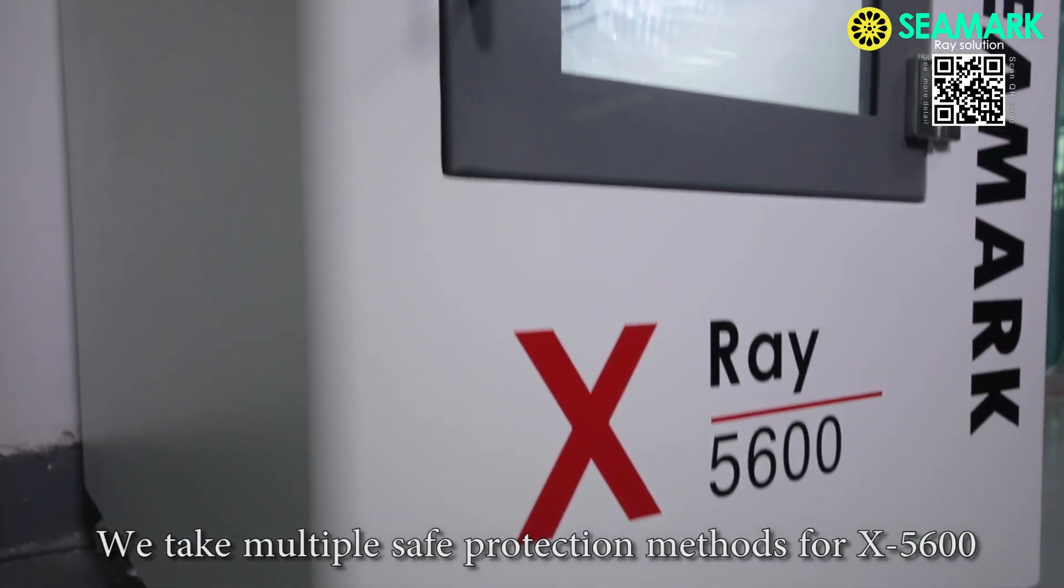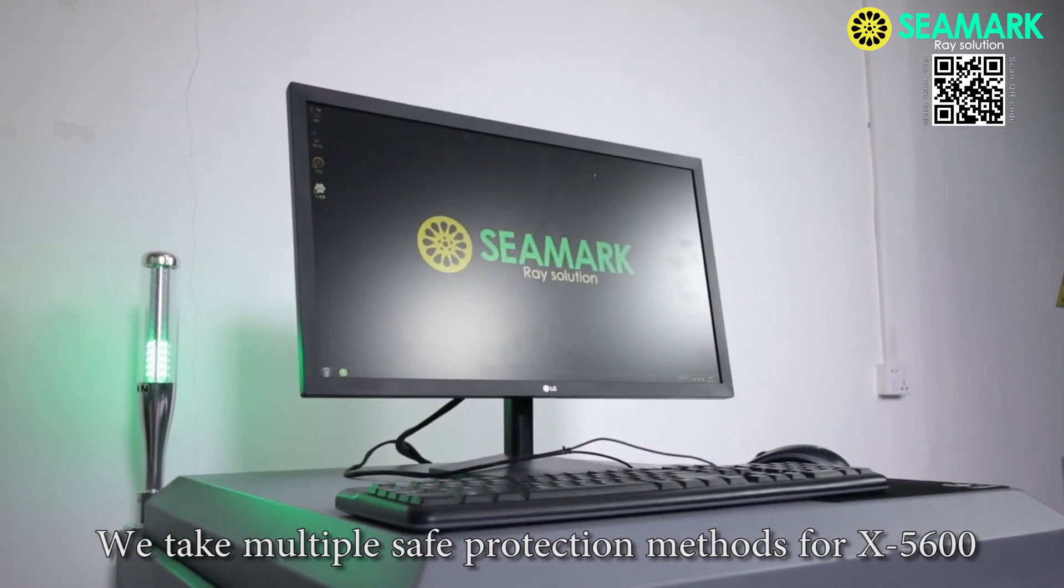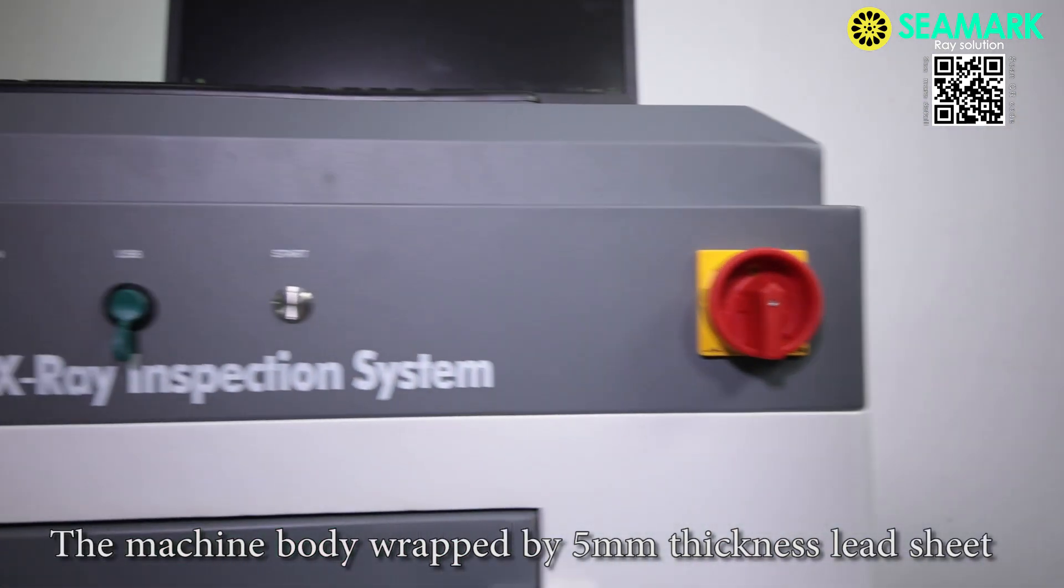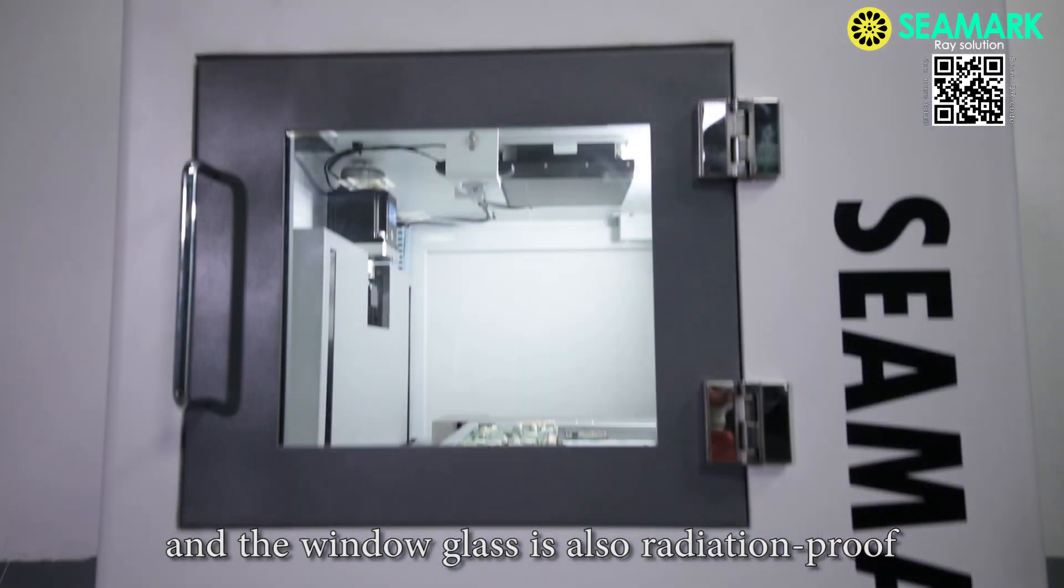We take multiple safe production methods for X-5600. The machine body wrapped by 5 mm thickness lead sheet and the window glass is also radiation proof.